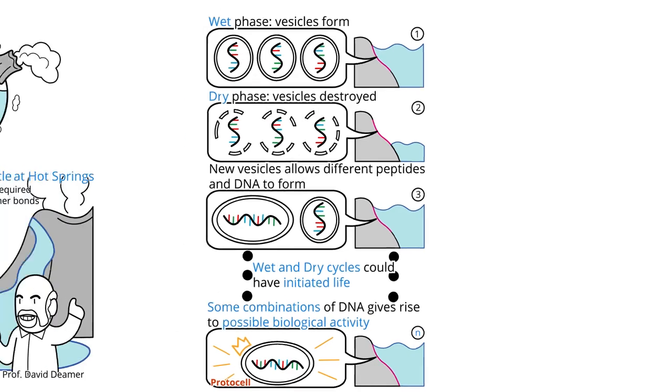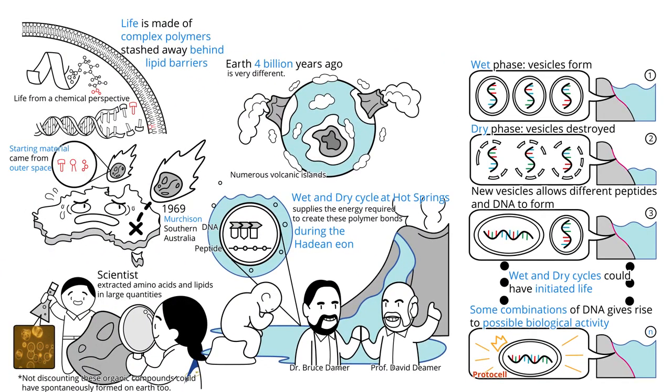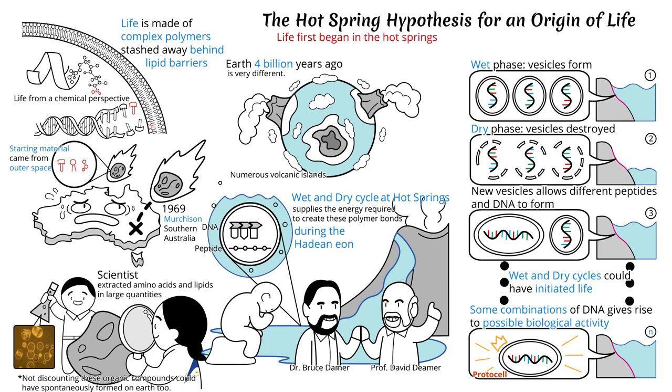And this is why Professor Dehmer and Dr. Dahmer think life first began in hot springs. From simple amino acids and nucleic acids and lipids, through countless cycles of wet and dry taking place at hot springs prevalent on Earth 4 billion years ago, to complex chains of DNA and proteins formed within vesicles called protocells.